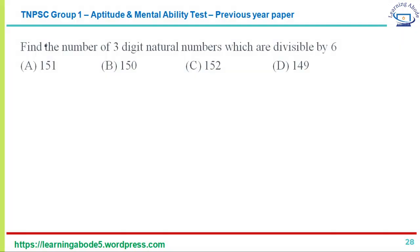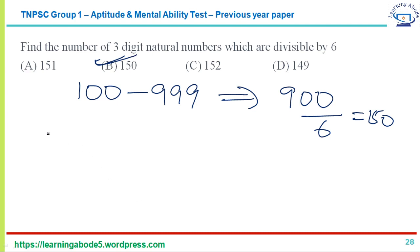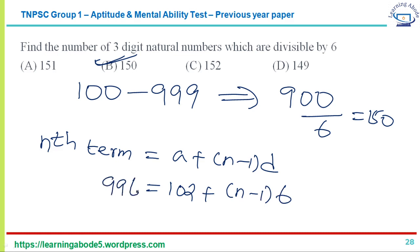Find the number of three-digit natural numbers divisible by 6. Three-digit numbers range from 100 to 999 — that is 900 numbers total. Dividing 900 by 6 gives 150. More formally using the AP nth-term formula: first three-digit multiple of 6 is 102, last is 996, common difference 6; solving 996 = 102 + (n−1)×6 gives n = 150. Answer option B — 150.